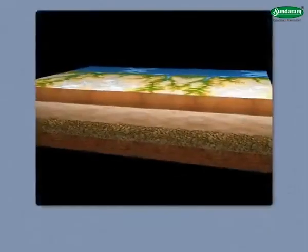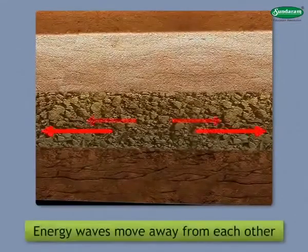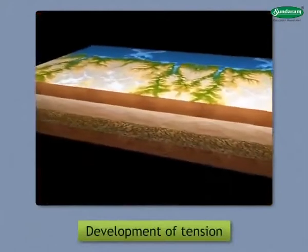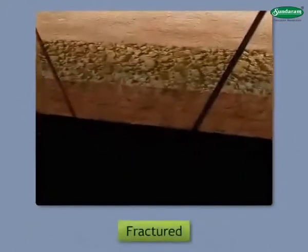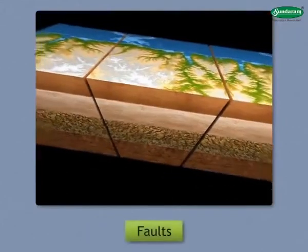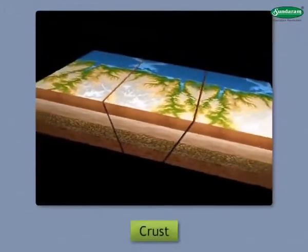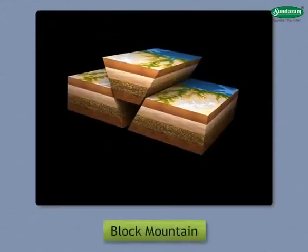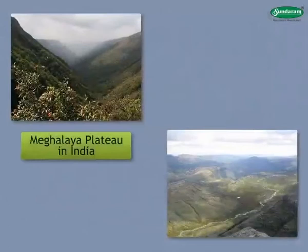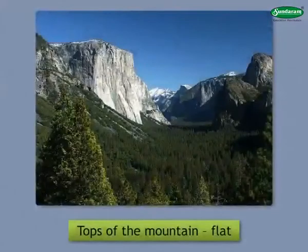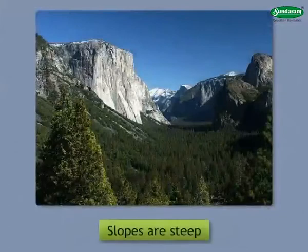Block Mountains. Sometimes, because of movement in the interior of the earth, energy waves move away from each other. Such conditions lead to the development of tension in the rock. As a result, rocks are fractured and move past each other along the planes of fractures. These fracture lines are called faults. When a portion of the crust between two parallel faults is raised up, it looks like a block — so it is called a block mountain. Examples include the Meghalaya Plateau in India and the Black Forest Mountain in Europe. The tops of block mountains are generally flat, they do not have peaks, and their slopes are steep.